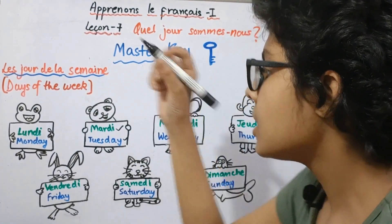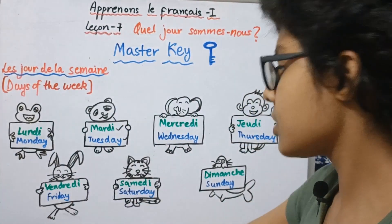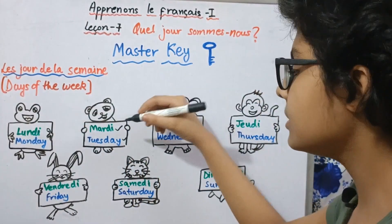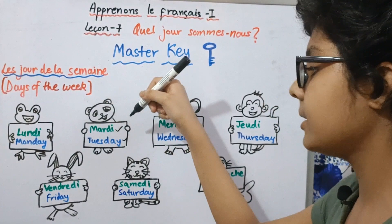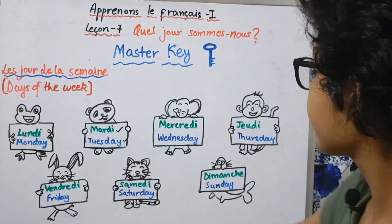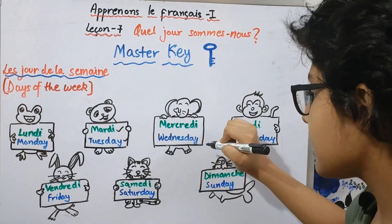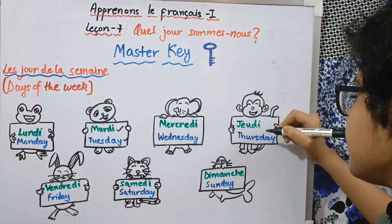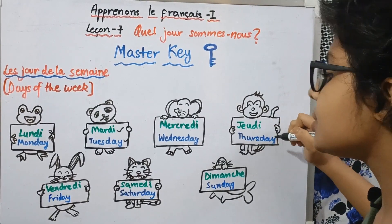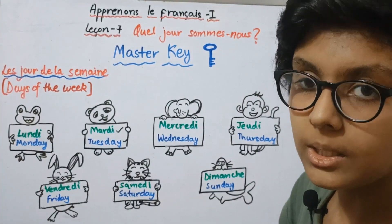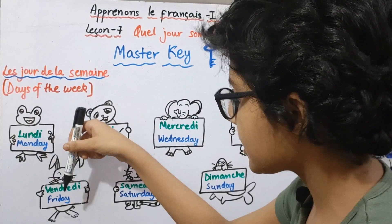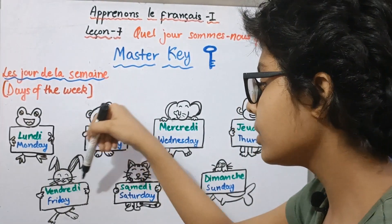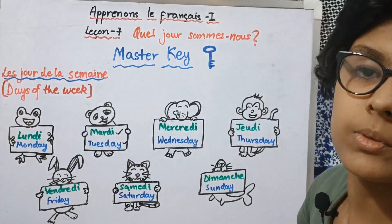The first one is of course Monday, which is lundi. Then we have mardi, which means Tuesday. Then we have Wednesday, which is mercredi. Then we have Thursday, which is called jeudi. And then we have Friday, which is called vendredi.